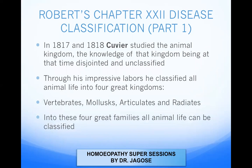In 1817 and 1818, Cuvier studied the animal kingdom, the knowledge of that kingdom being at that time disjointed and unclassified. Through his impressive labors, he classified all animals into four great kingdoms: the vertebrates, the molluscs, the articulates, and the radiates. In these four great families, all animal life can be classified.